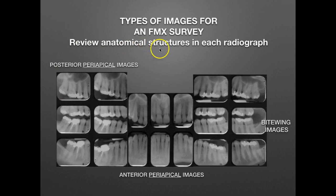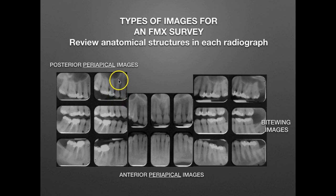As far as anatomical structures, we see the enamel, the dentin, the pulp chamber, the pulpal canal, and any existing restorations. Specifically with a periapical image we have the apex shown of the teeth. Moving to the maxillary right premolar periapical image, we see the premolars and the entire tooth from the root and apex to the crown and surrounding structures — very important in a periapical image.